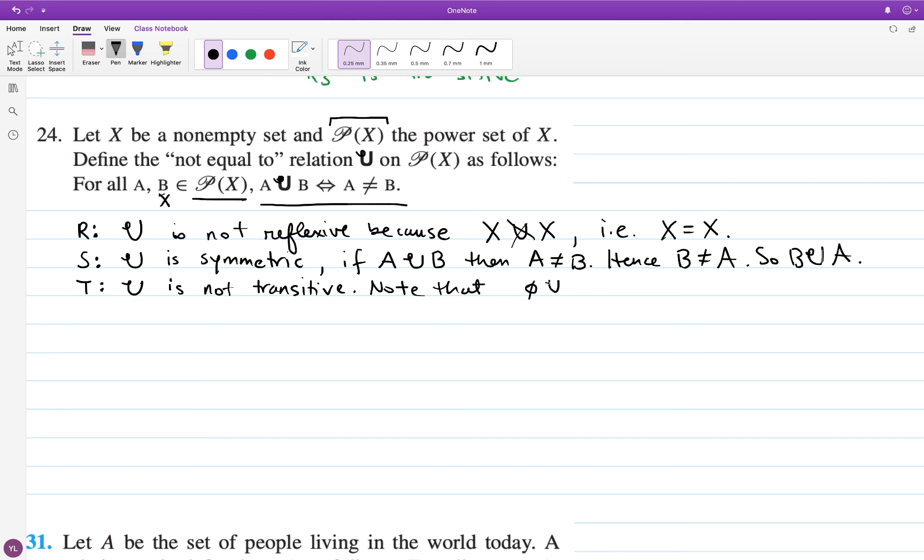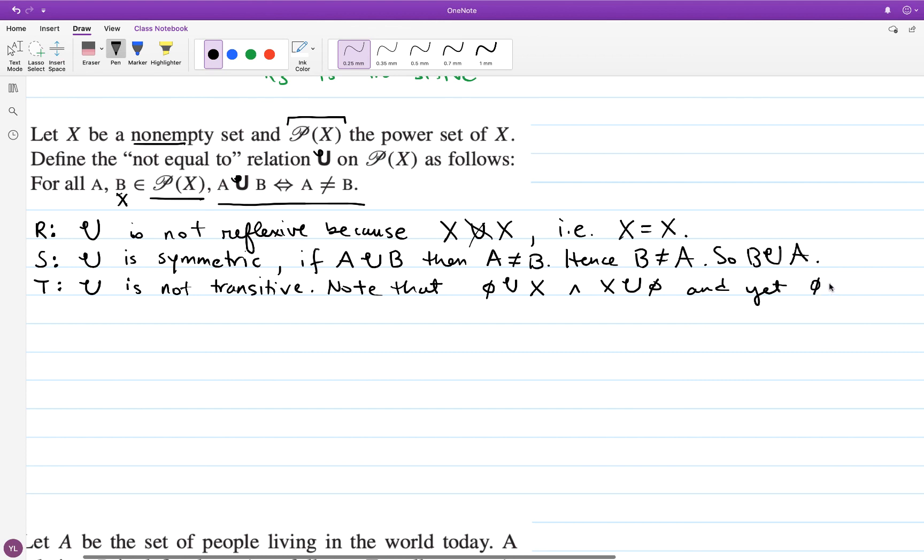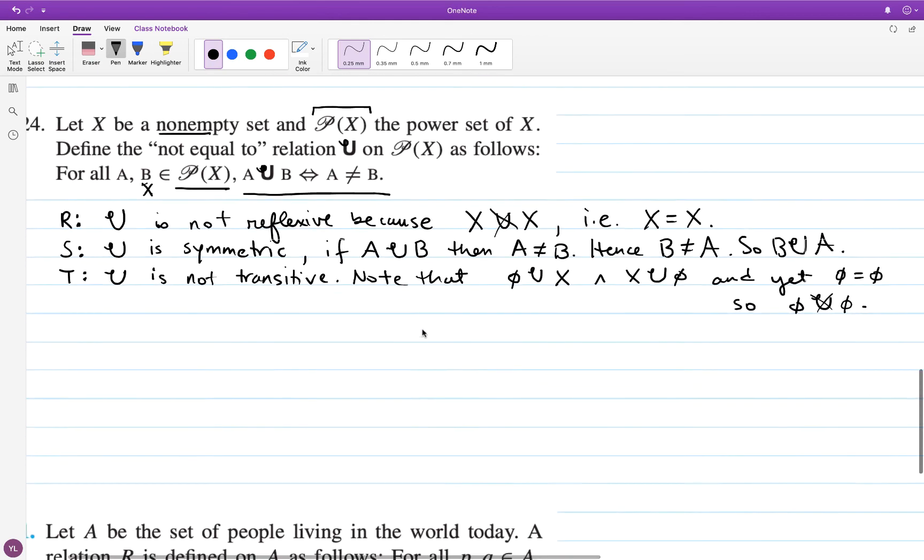And x is related to the empty set. I've just stated the same thing in a different way, but they're both true statements. And yet, if this relation were to be transitive, I should be able to conclude from this that empty set is related to the empty set. But that's not true. Empty set is equal to the empty set. So I have that empty set is not related to itself. So that proves that this relation is not transitive.